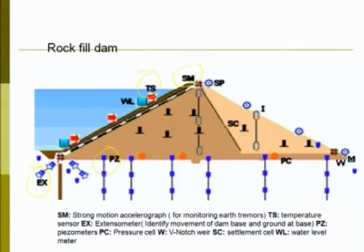PC is your pressure cell. These are all shown in typical red color. Pressure cells are placed along the width and length direction of the dam so that you can measure how much pressure is transferred from the dam to the foundation.